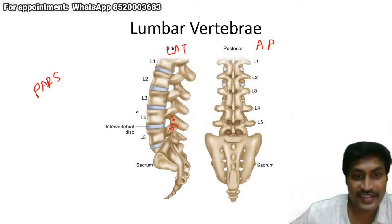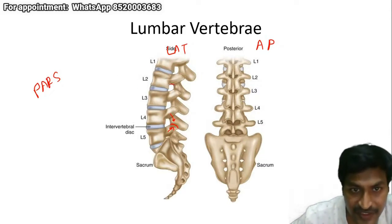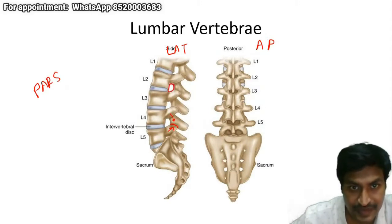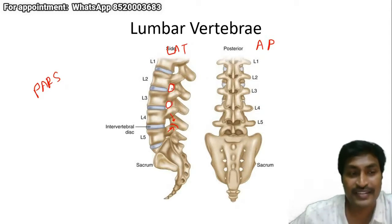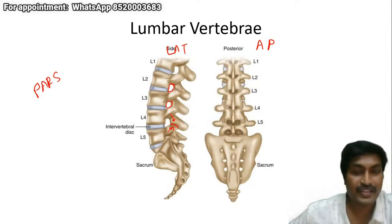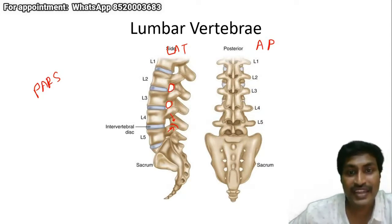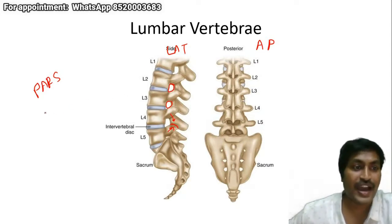Once you have understood pars interarticularis, the next structure which you have to recognize is this hole-like structure. These holes are known as the neural foramina. Through the neural foramina, we have the spinal nerves which come out. So you will have to identify the neural foramina also.